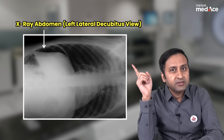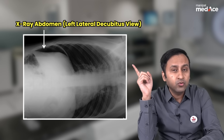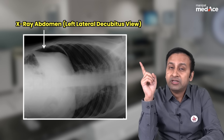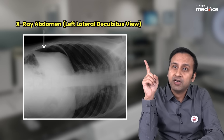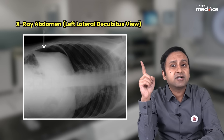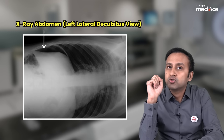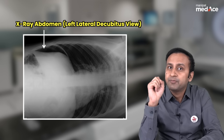For patients who cannot stand erect and we have to take a radiograph in a supine posture, x-ray abdomen taken in a left lateral decubitus view will show the air rising over the surface of the liver. This radiograph is considered the second most sensitive radiograph for the diagnosis of pneumoperitoneum.